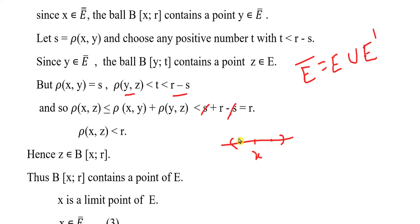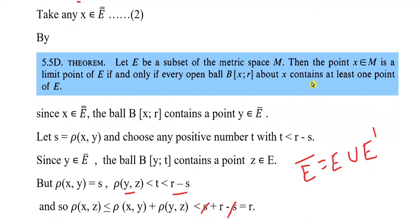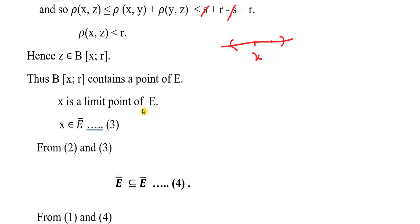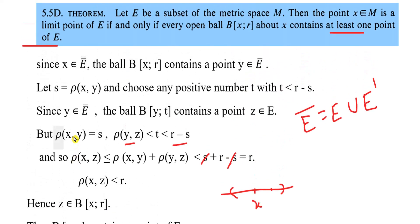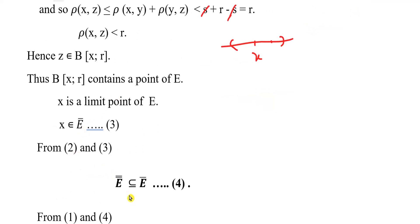Thus B(x, r) contains the point z of E, so every ball B(x, r) contains at least one point of E. By theorem 5.5D, x is a limit point of E, so x belongs to Ē. Therefore E̅̅ ⊆ Ē, which is equation 2.